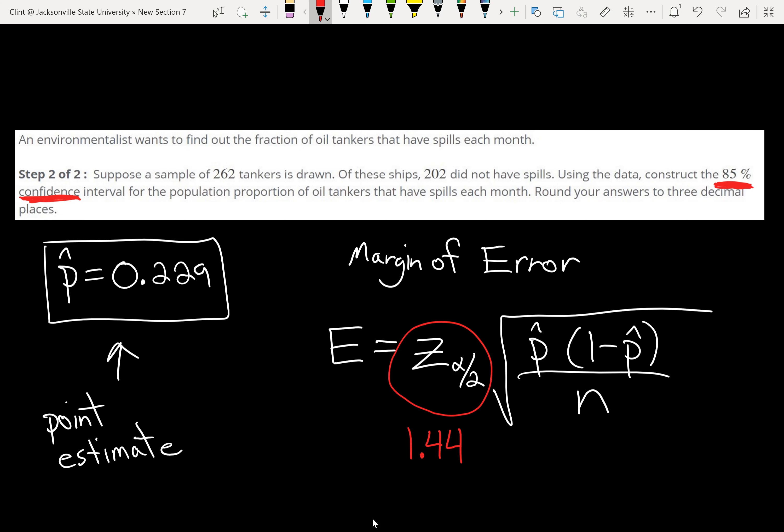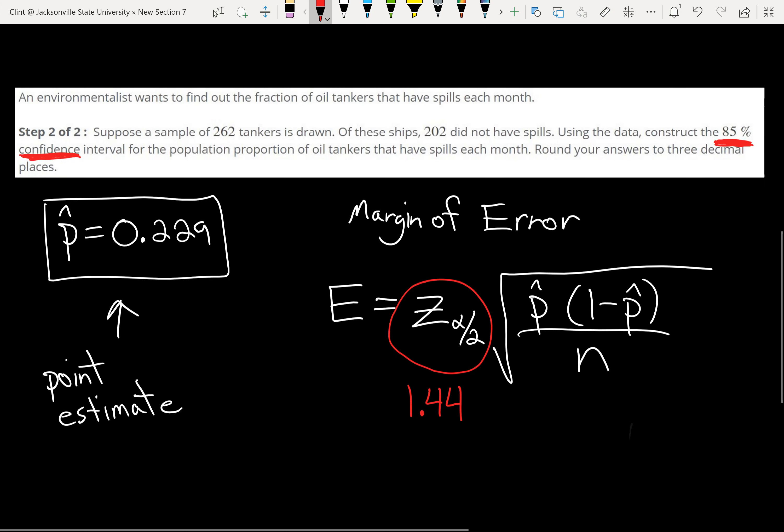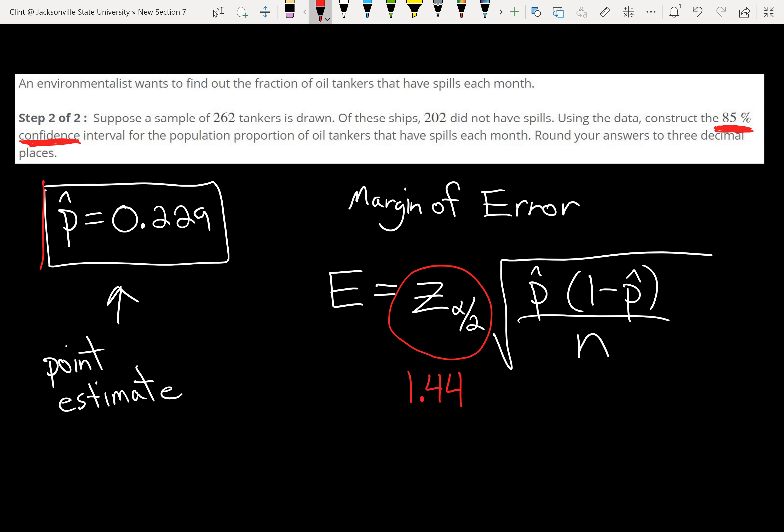And then the rest of these we've got p-hat over here. And then our sample size n is 262.